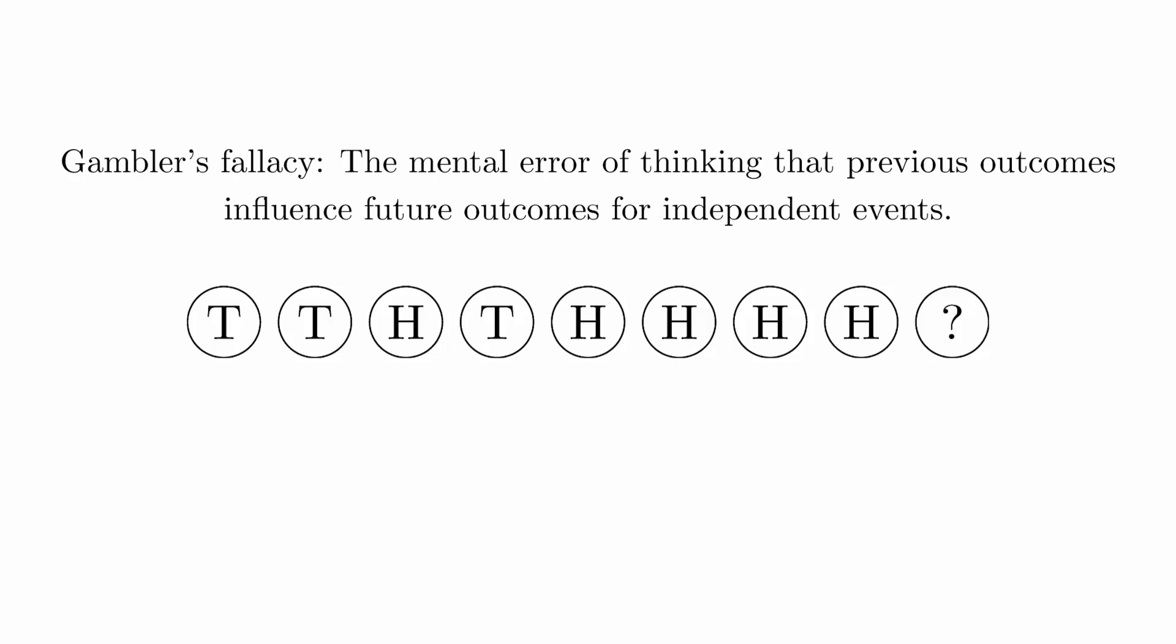This is known as the gambler's fallacy. We think that the probability of future events are impacted by previous events.